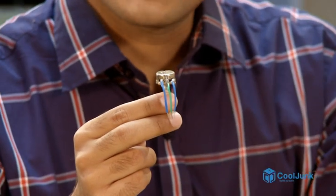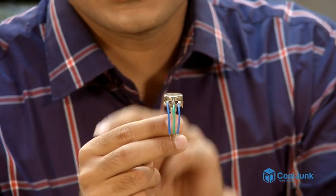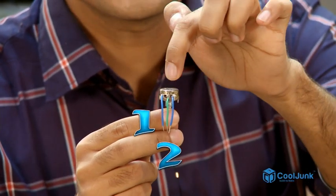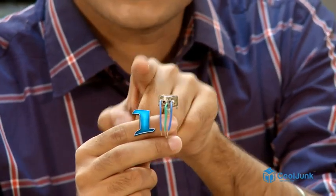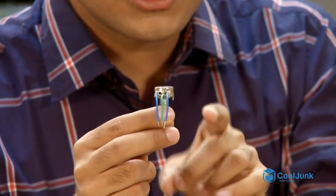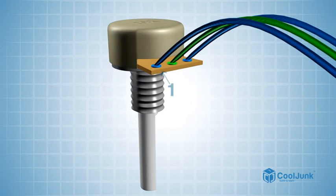You will see three wires attached to its three terminals. I will now name the terminals as 1, 2 and 3. So my side terminals are 1 and 3 and my middle terminal is 2. To use a potentiometer as a variable resistor, you will have to use two terminals — either terminals 1 and 2 or terminals 2 and 3.